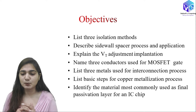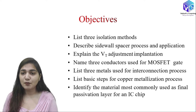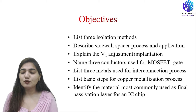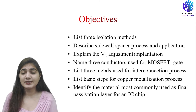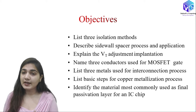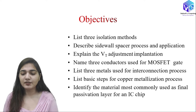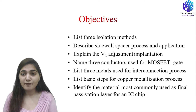We are going to see the complete process for the formation of the sidewall spacer. After that, we are going to see threshold voltage adjustment implantation — how we can adjust the threshold voltage for a given MOSFET in an IC. Then we are going to see the three conductors used for MOSFET gate formation using techniques like chemical vapor deposition, and list the three metals used for the interconnection process in metallization.